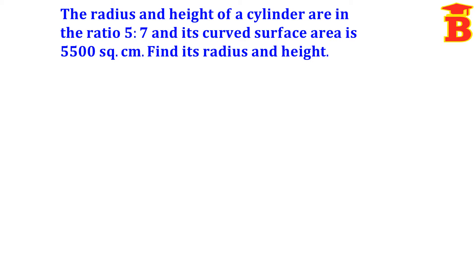Now let us see the problems. The radius and height of a cylinder are in the ratio 5 is to 7, and its curved surface area is 5500 square centimeter. Find its radius and height.